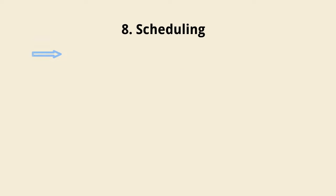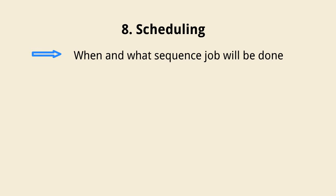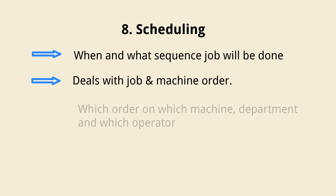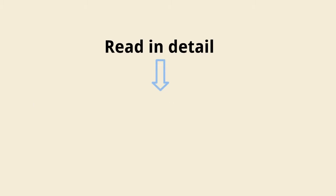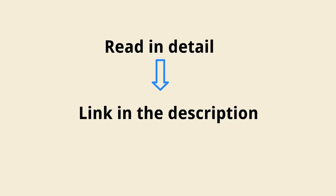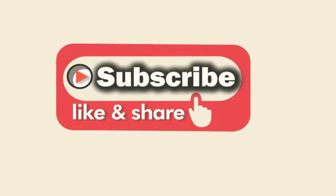8. Scheduling. Scheduling means when and what sequence the job will be done. Scheduling deals with job orders and machines; it decides which order will be taken on which machine, department, and which operator. You can read it in detail by going through the link in the description. If you find the video helpful, please like the video and don't forget to subscribe. Thank you.